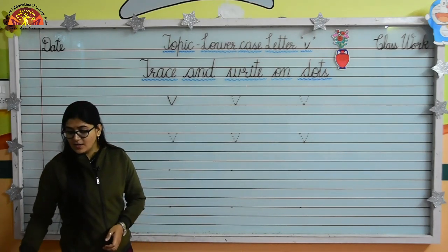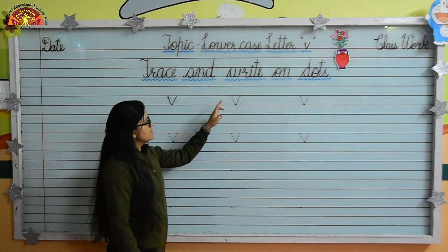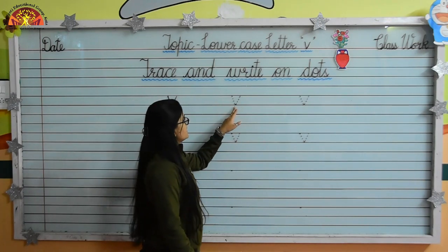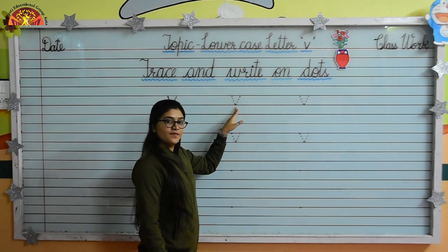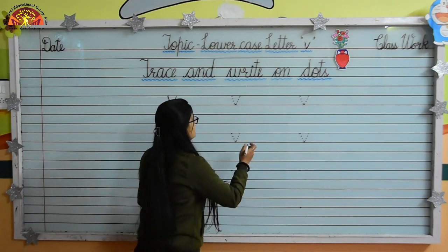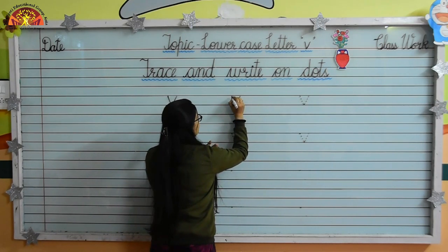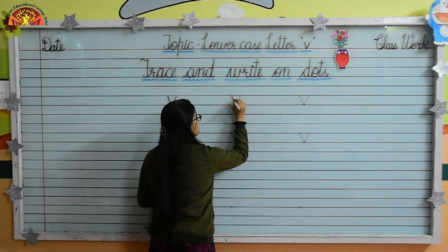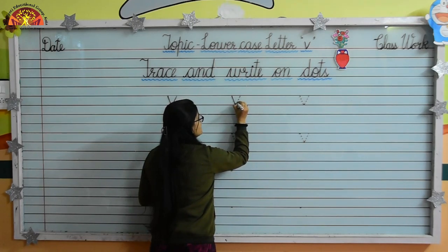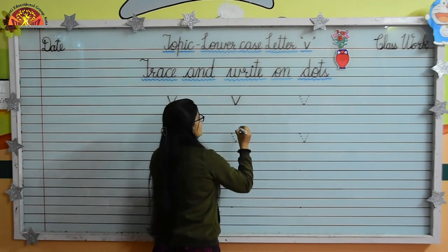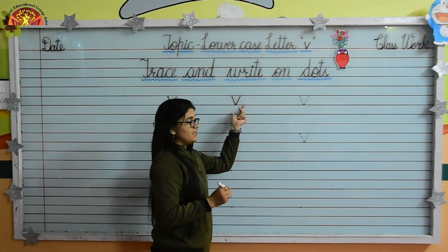Now sharpen your pencil. First we will trace lowercase letter V. So put your pencil here and draw a slanting line. And now from here, we will draw one more slanting line like this. Lowercase letter V.